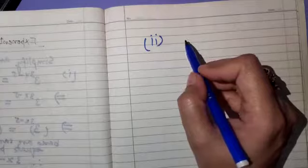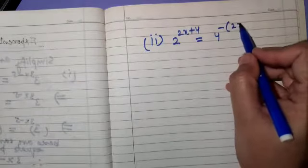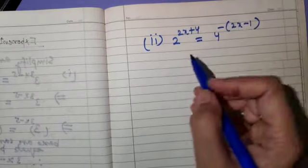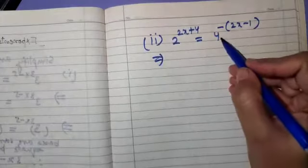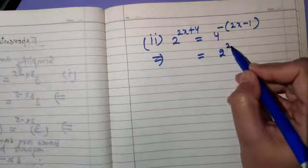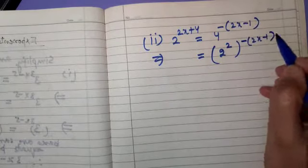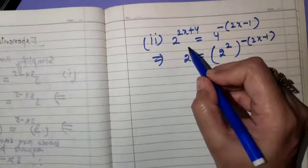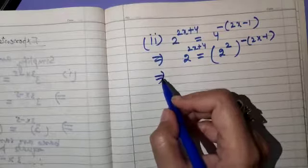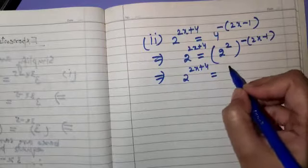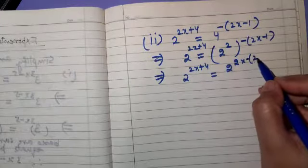Second part: 2 raised to the power 2x plus 4 is equal to 4 raised to the power minus of 2x minus 1. On the right-hand side, we express 4 as 2 squared, so this becomes 2 squared raised to the power minus of 2x minus 1. On the left side we have 2 raised to the power 2x plus 4, so we make the bases the same.